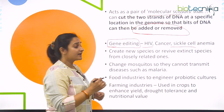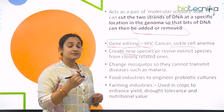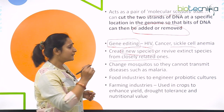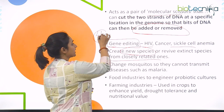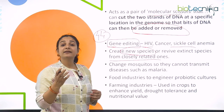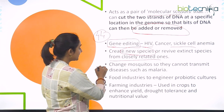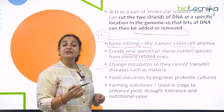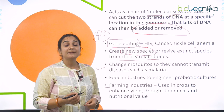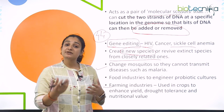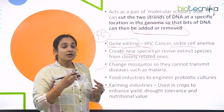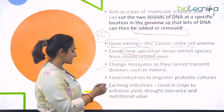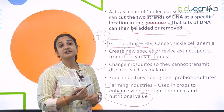CRISPR-Cas can also be used to create new species or revive extinct species from closely related ones. For example, the difference between a mammoth and an elephant is 44 genes — we can add or delete those 44 genes to revive the extinct mammoth. We can also change mosquitoes so they don't transmit malaria anymore. In food industries, it is used to engineer probiotic cultures, and in farming, CRISPR-Cas is used to enhance crop yield, increase tolerance for stresses like drought or waterlogging, and increase the nutritional value in crops.